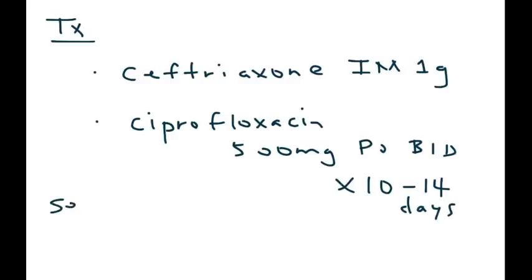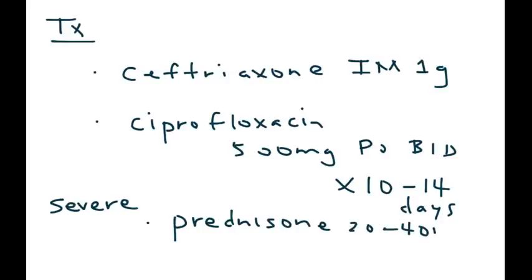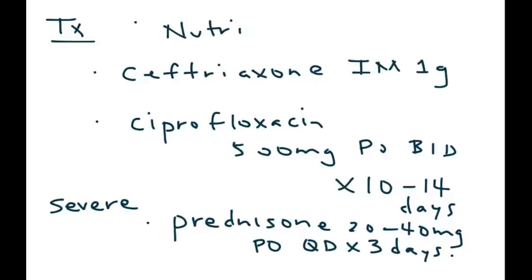If the patient is severely ill, you can add a steroid such as prednisone, anywhere from about 20 to 40 milligrams orally once a day for the first three days. Also, stress to the patient that they should have adequate nutrition, because the 12% mortality most commonly occurs in people who are malnourished — so this is important.